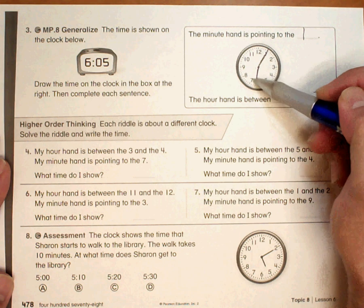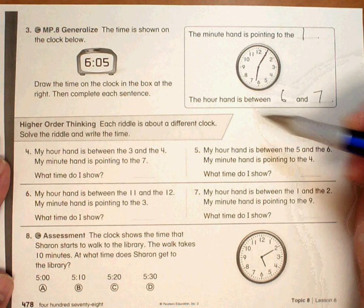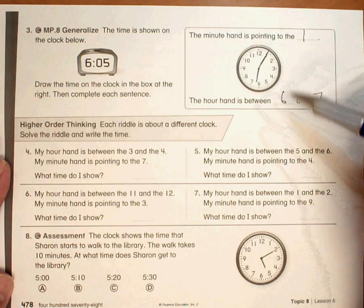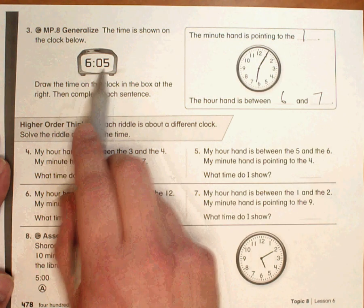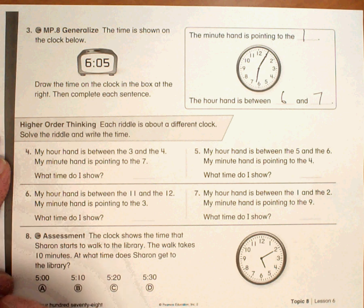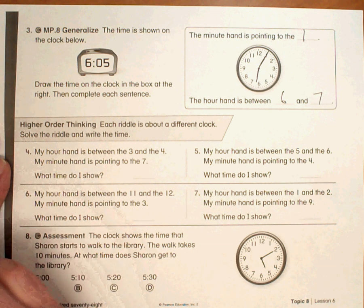Technically speaking, my hour hand is a little too far past the 6. But as long as it's between the 6 and the 7, and closer to the 6, because it's only been 5 minutes past the hour, then the answer will be correct.